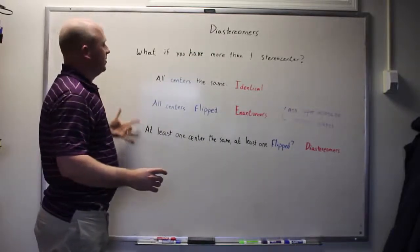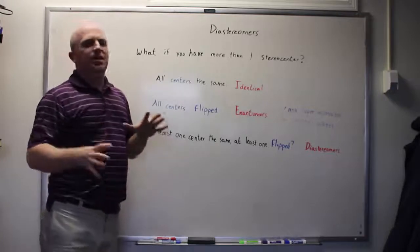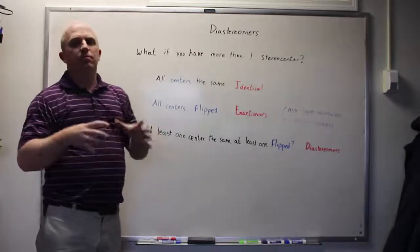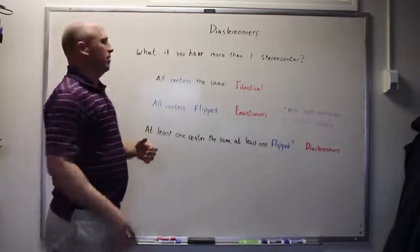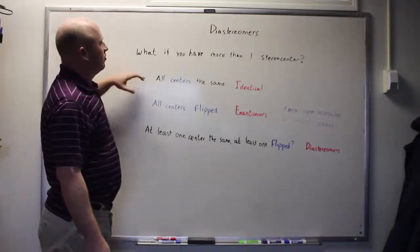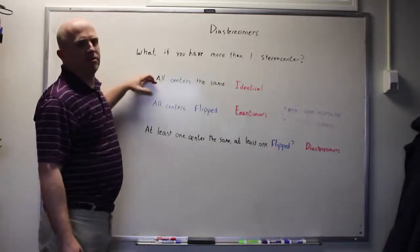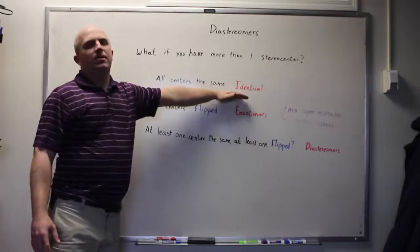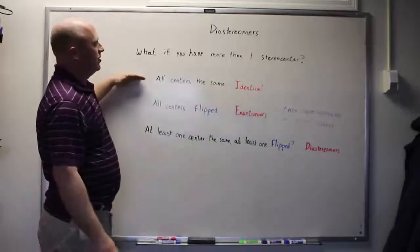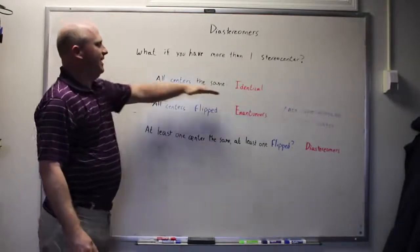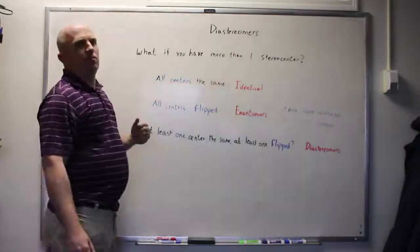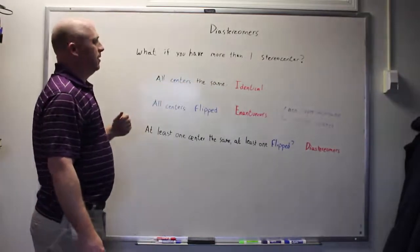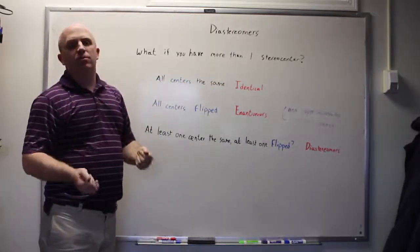We are going to be trying to categorize what happens when you make some changes to a molecule. What is the relationship between pairs of molecules? So if you have pairs of molecules where all stereogenic centers are the same, then what you're really talking about is identical molecules. It's relatively easy to tell when you're looking at pairs of identical molecules because they are superimposable.